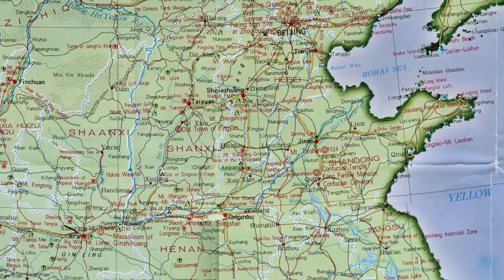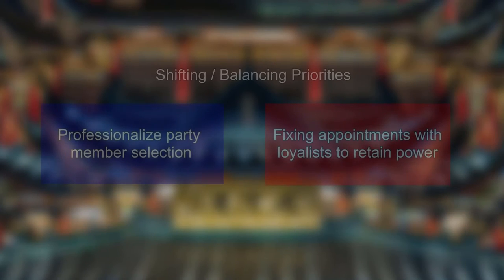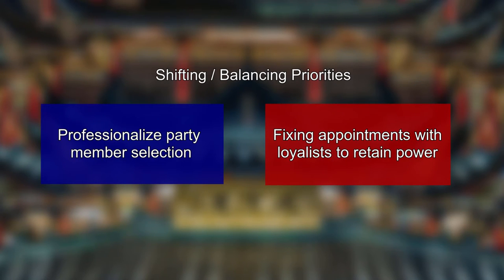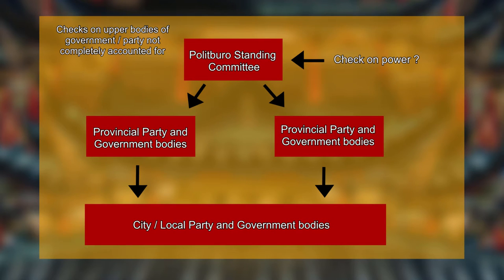There is a contradiction in this system like many political systems. On the one hand, the party tries to professionalize the selection of officials, but on the other hand, it undermines this effort by fixing appointments with loyalists. Additionally, there is a potential issue of a lack of checks and balances in this system, in which the PSC, the Politburo Standing Committee, has few other authorities to counter its power.